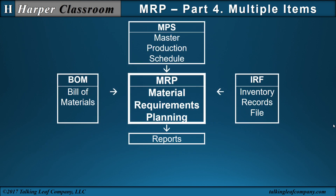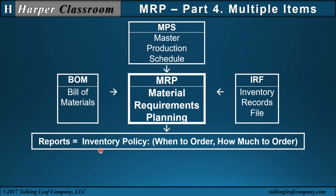Let's start with the inputs. The inputs to the MRP are the Bill of Materials, the Master Production Schedule, and the Inventory Records File. The output is a report representing the inventory policy — which is when to order and how much to order — of every item in your multiple item inventory.